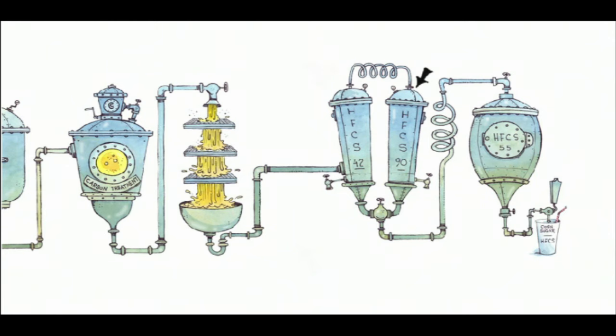Finally, the two liquids, HFCS 42 and HFCS 90, are blended to make a mixture that is 55% fructose. The final blend, called HFCS 55, is widely used as a sweetener in sodas.